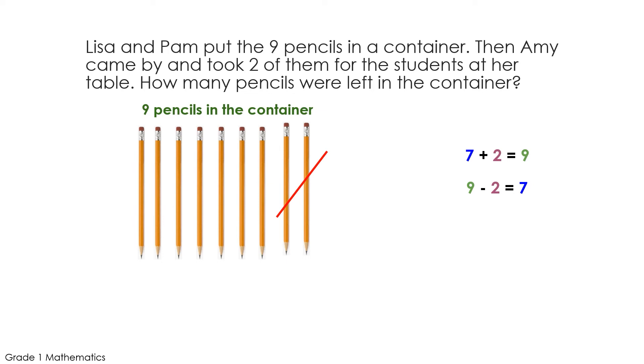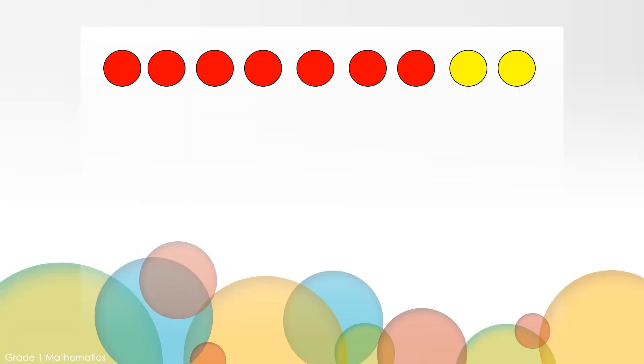We know this to be true because these are related facts, which means seven, two, and nine are all related to each other through addition and subtraction. Let's explore these related facts a little bit more. Let's look at another way to show how seven, two, and nine are related by using counters.